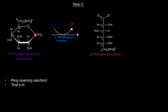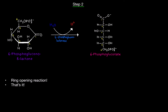Number your carbons starting from carbon one through six on both structures — everything stays the same. The oxygen with a negative charge in the opened ring comes from the original ring oxygen. So we're using 6-phosphogluconolactonase and adding water to open up the ring, giving us 6-phosphogluconate.